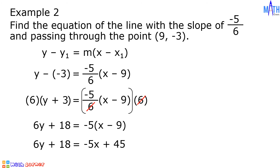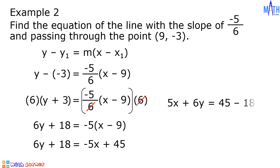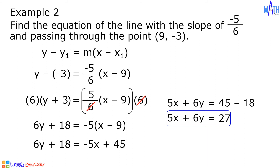Let us transpose negative 5x on the left side and transpose 18 on the right side. We have 5x plus 6y equals 45 minus 18. Since 45 minus 18 is equal to 27, then we have 5x plus 6y equals 27. This is the equation of the line with the slope of negative 5 over 6 and passing through (9, negative 3).